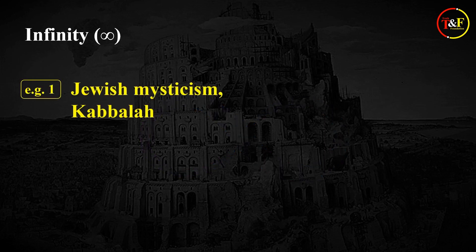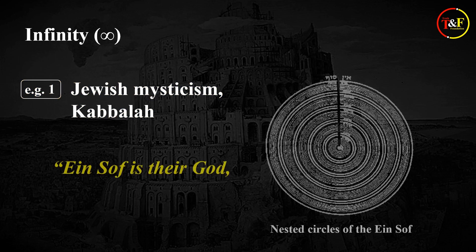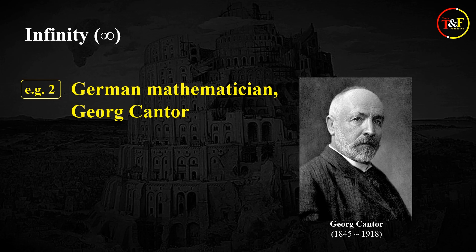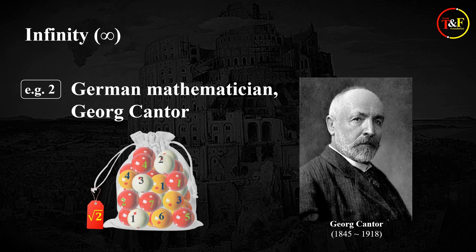One of the prominent groups is Jewish mysticism, Kabbalah, and in Kabbalah, they seek their god, Ein Sof, the meaning of which is infinity. However, you don't even have to go into trouble to look at other religious groups to find the link between religion and infinity. It is in the realm of mathematics that there was a strong linkage between a certain religious belief and infinity. The most vivid example is the German mathematician Georg Cantor, one of the mathematicians who defined the real number as a collection of infinitely many entities.